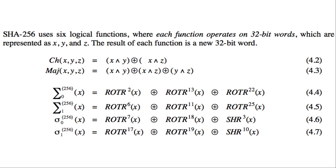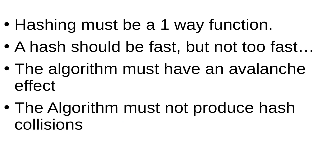Regardless of what math you use to create a hashing algorithm, a good one needs to accomplish at least four things. Hashes need to be a one-way function, meaning it should be impossible to reproduce the original data from the hash the algorithm produces — there shouldn't be any way to work backwards from that 32-bit hexadecimal product to get the original input. Hash algorithms also need to be fast, but not too fast. This is a common thread in information security: we want things to be quick, but if things are too quick or too simple, they become easy to break.